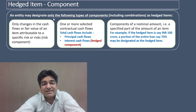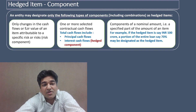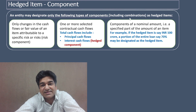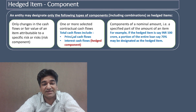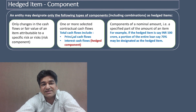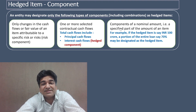Ind AS 109 says the following types of components can be designated as hedged items: number one, changes in cash flows or fair value of an item; number two, one or more contractual cash flows; and number three, a component of a nominal amount — that is, a specified portion of the amount of an item.